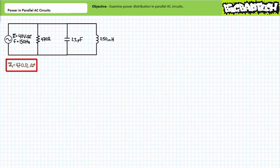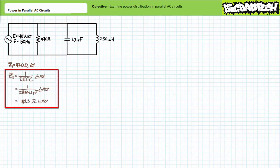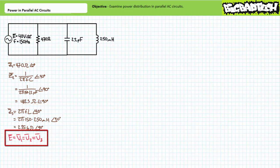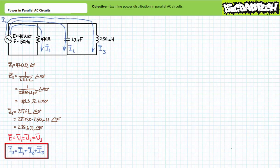If you're tracking, you should have obtained the following results. The complex impedance of the 470 ohm resistor is 470 ohms at an angle of zero degrees — let's call this Z1. The complex impedance of the 2.2 microfarad capacitor at 150 hertz is approximately 482.3 ohms at an angle of negative 90 degrees — let's call this Z2. Finally, the complex impedance of the 250 millihenry inductor at 150 hertz is approximately 235.6 ohms at an angle of 90 degrees — let's call this Z3. Supply voltage E equals V1, which equals V2, which equals V3, and source current equals I1 plus I2 plus I3.